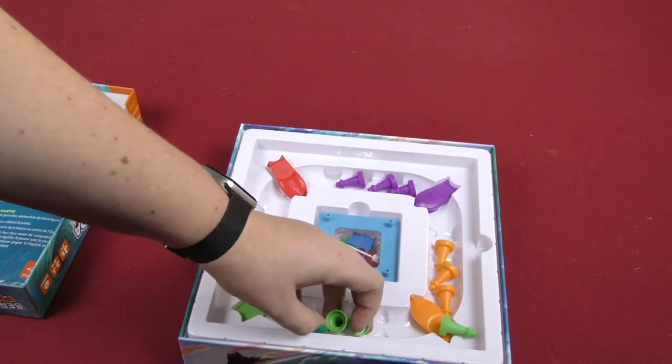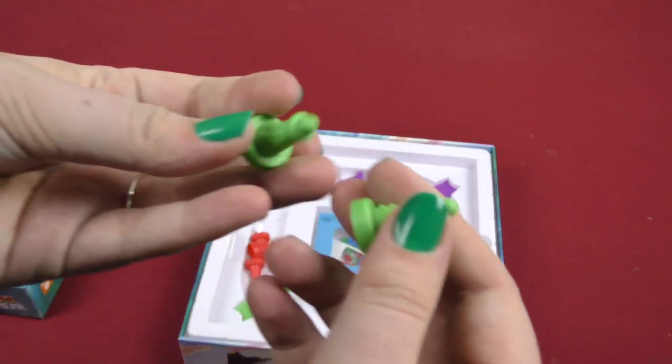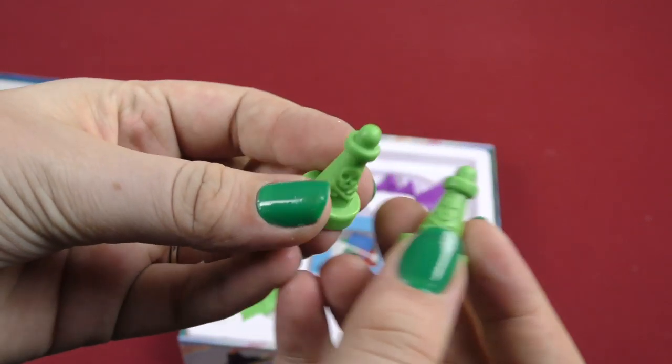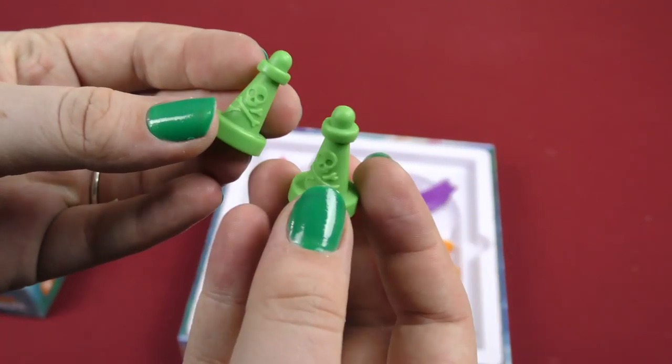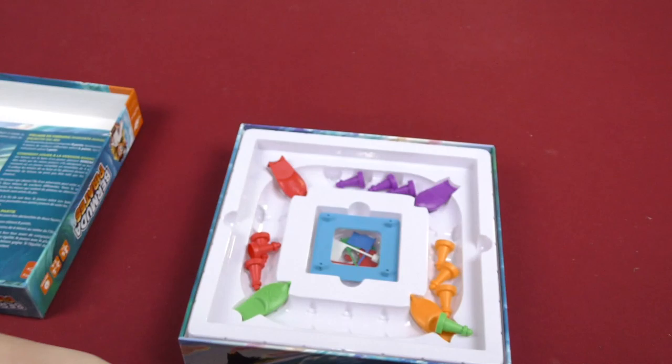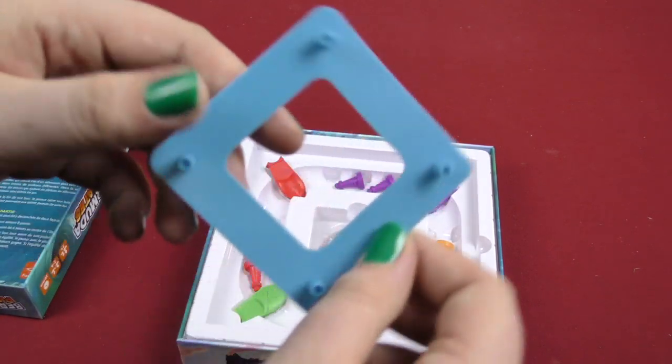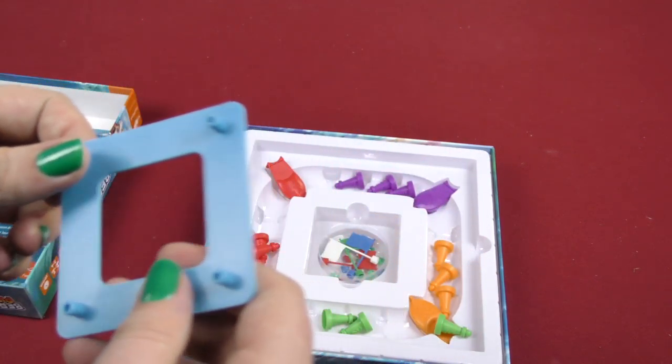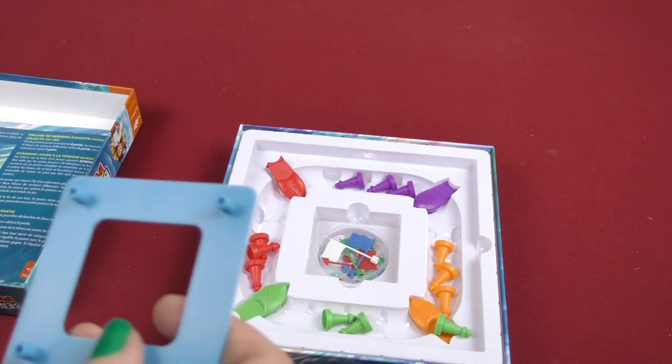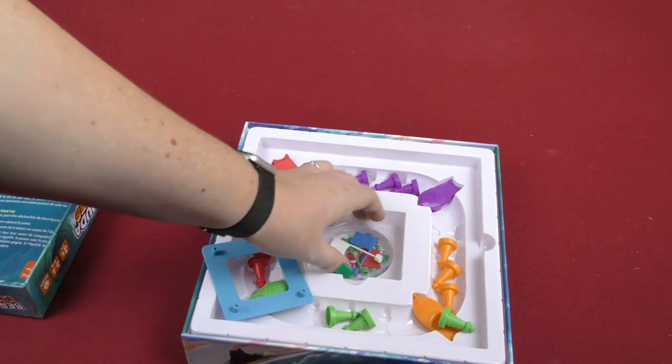And then here we got your little buoy things. You got nice little plastic pieces here. And then, we also got this blue thing. I don't know what this is for. I guess it's to connect all the other boards together.